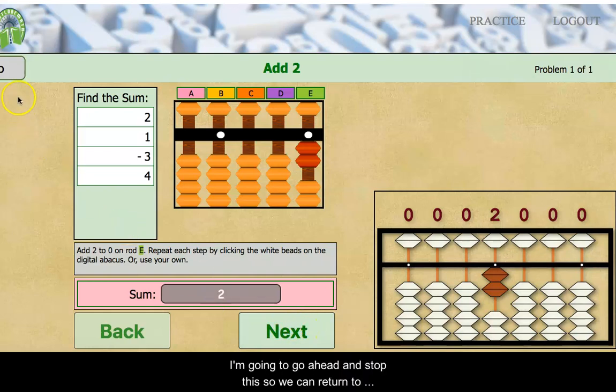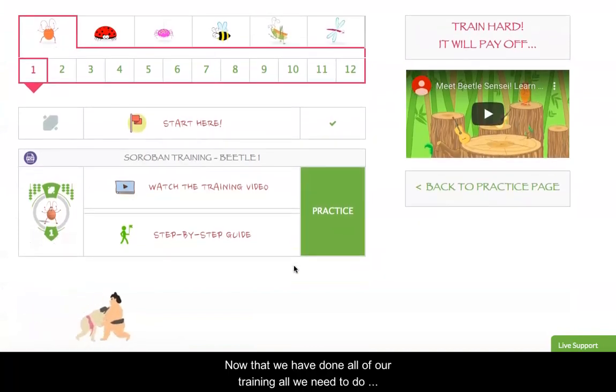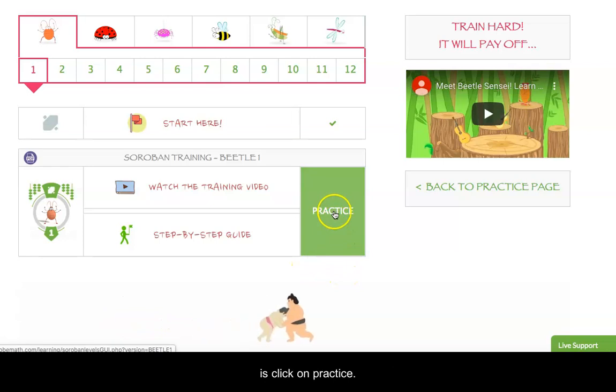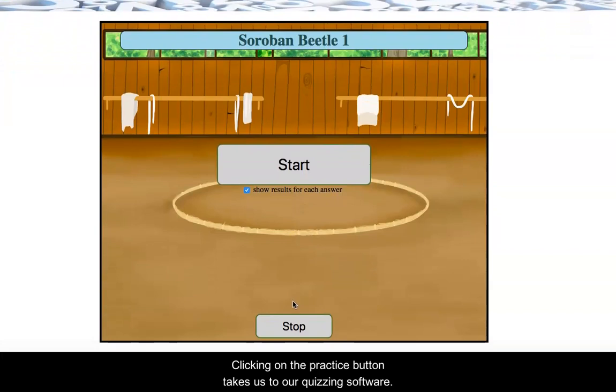I'm going to stop this so we can return to our practice page. So now that we have done all of our training, all we need to do is click on the practice button. Clicking on the practice button takes us to our quizzing software, and here all a user needs to do is click on the start button, and clicking on the start button, the software will generate a unique problem at this level for the user to practice.